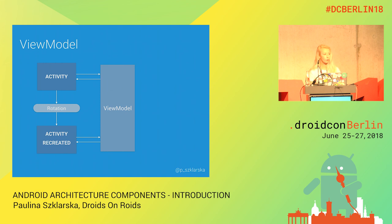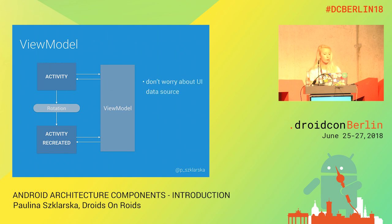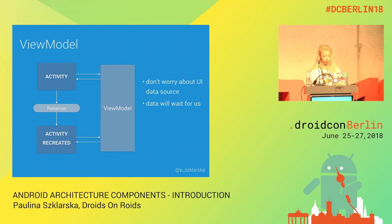ViewModel is basically a source of data for our activity or fragment that is independent from the activity — it has its own lifecycle. Thanks to this, after the activity is recreated we still have the same ViewModel and we don't need to worry about the data. We don't need to worry about creating, destroying, or finishing it, and no memory leaks. The data will wait for us — if an API call returns before the activity is recreated, the data will be ready in the ViewModel. The data will always be updated even after activity recreation.